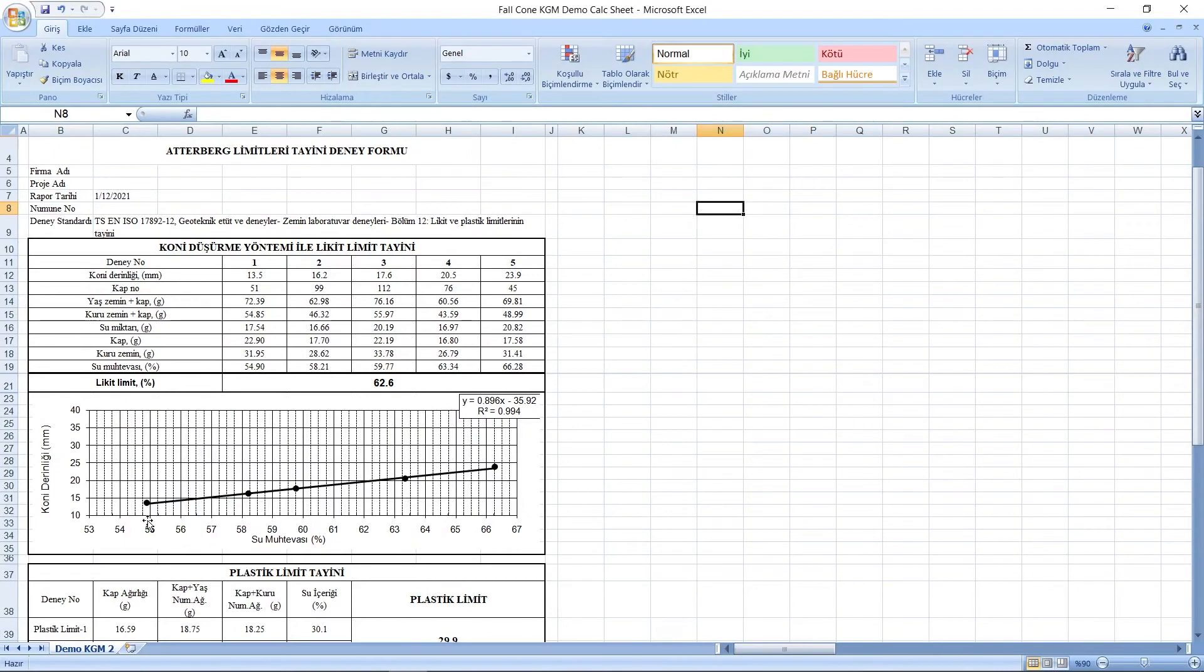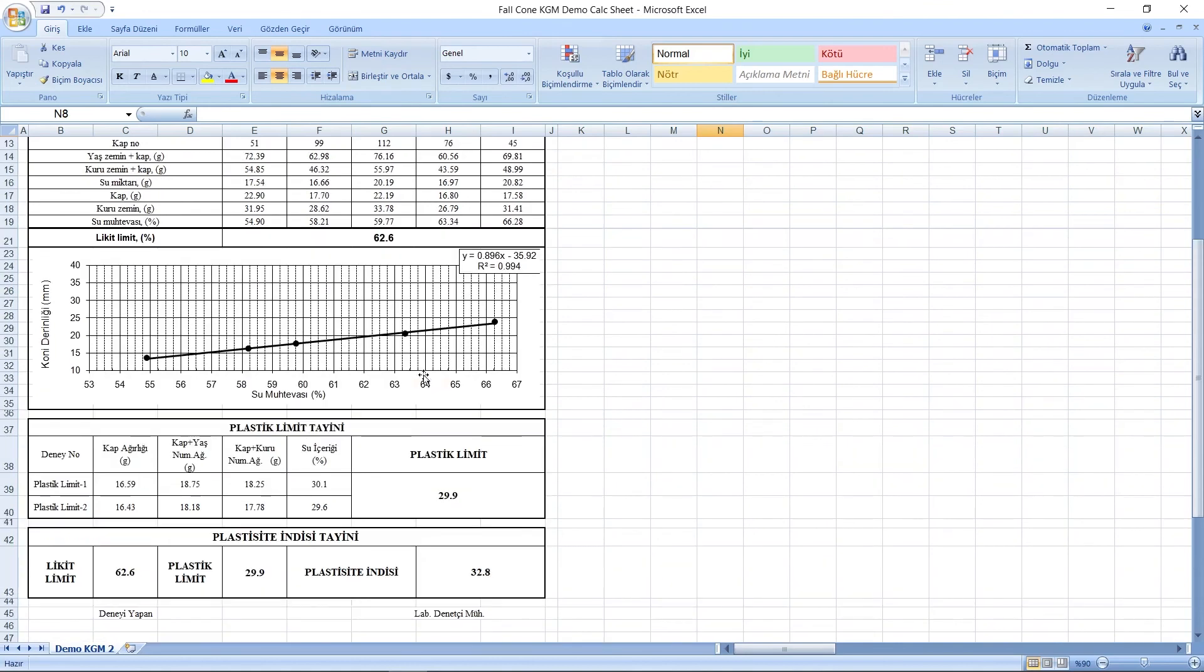Plot the measured water contents as the ordinate on a linear scale and the corresponding cone penetration as abscissa on a log 10 scale if using the 60 gram cone. An example plot for the 60 gram cone is shown in the figure. Draw the best straight line fit through the plotted points. If one of the measured water contents differs by more than five relative percent in water content from the line, this test point may be omitted from the regression. If the remaining three points do not give a satisfactory linear relationship, the test should be repeated.